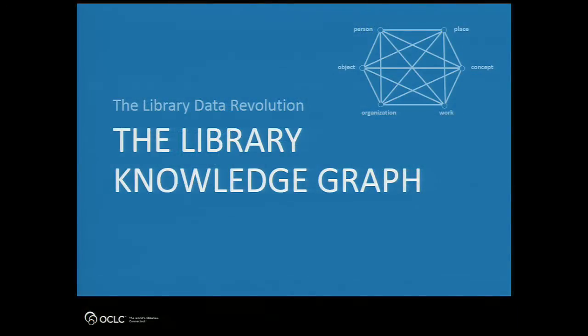The library knowledge graph — this is a term you may hear more and more talked about. Without going into graph theory, these are theories coming out of mathematics, computer science, and data science that say you don't just want a database or an inventory of stuff. You want things that are relatable — you want things that show relationships between things. That's not only an important technique for being known on the web, but also sound data management principles. We need to catch up to those so we can create a library knowledge graph.